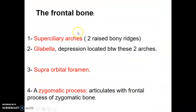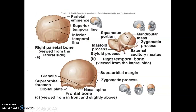The frontal bone features superciliary arches, which are two raised bony ridges, with the glabella being the depression between them. There is a supraorbital foramen above the orbit and a zygomatic process that articulates with the frontal process of the zygomatic bone. The orbital plate of the frontal bone forms the roof of the orbit.